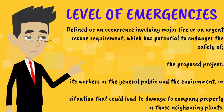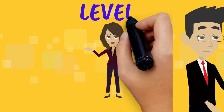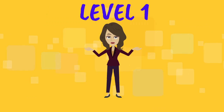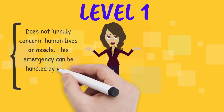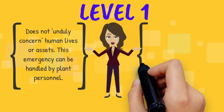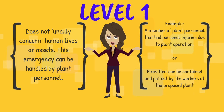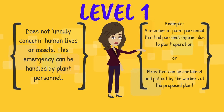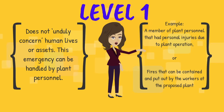A Level 1 emergency is categorized as a situation which does not unduly concern human lives or assets. This emergency can be handled by plant personnel. For example, a member of plant personnel who had personal injuries due to plant operation, or fires that can be contained and put out by workers at the proposed plant.